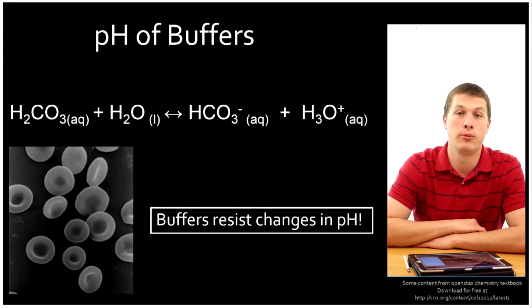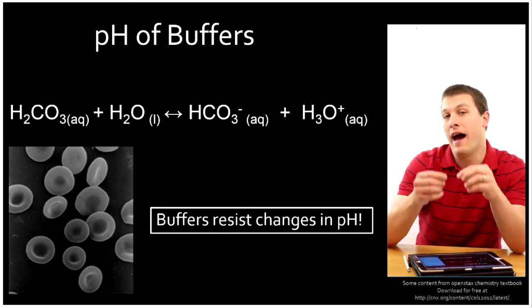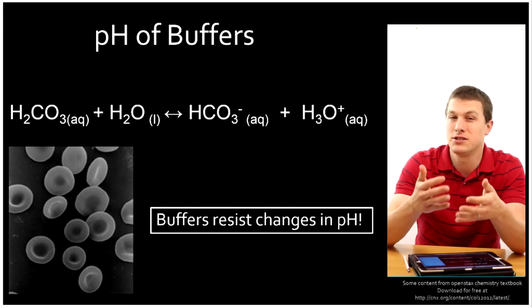First I'm going to tell you what buffers are and then we're going to calculate the pH of a buffer solution. So first, what's a buffer? A buffer is a solution that resists changes in pH and that's actually really important. That means that you can add an acid or base and it doesn't change the pH much.